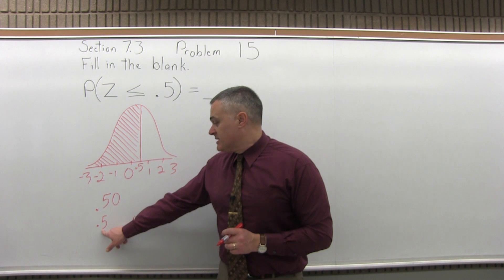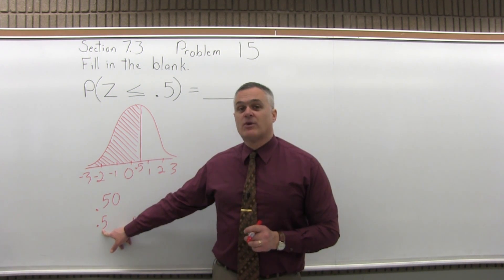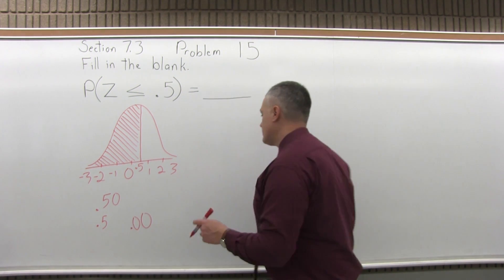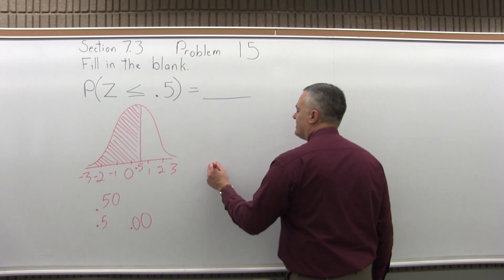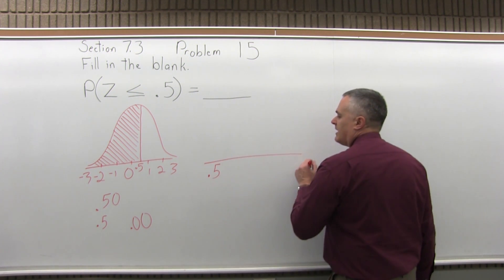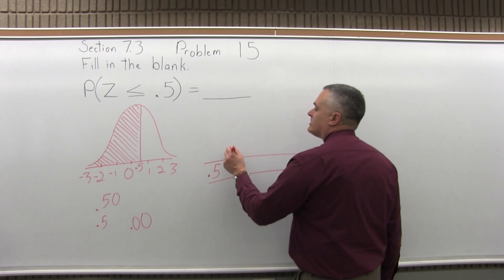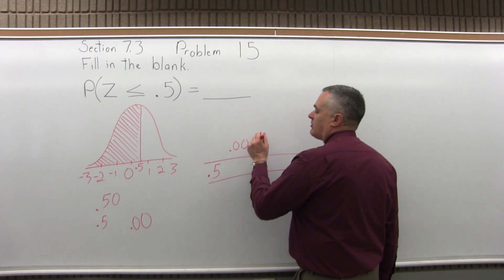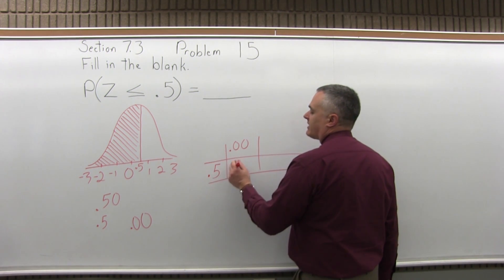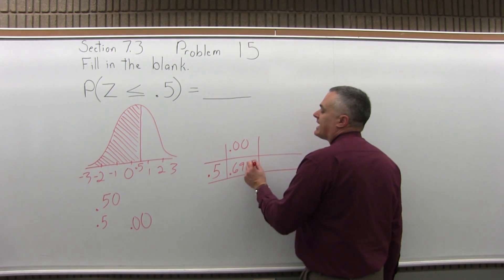So now the fourth step is I'm going to go into the .5 row of the positive portion of the chart, which is kind of near the top, and then I'm going to look under the .00 column, which is the first column or leftmost column, and see where they intersect. They intersect at .6915.